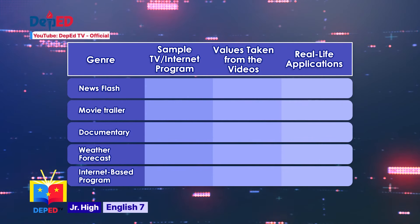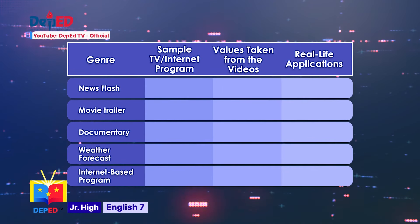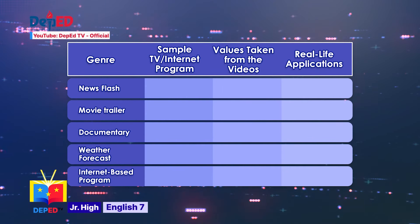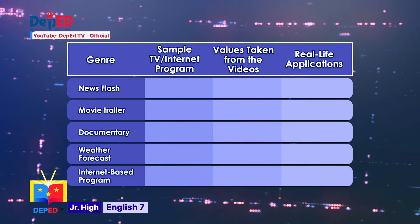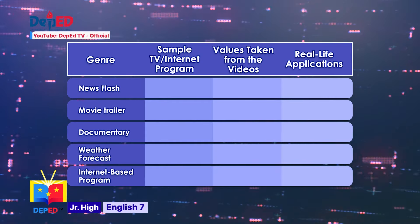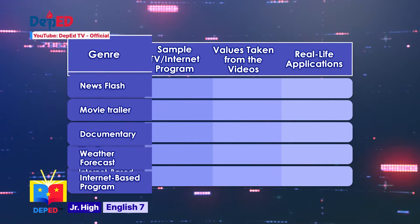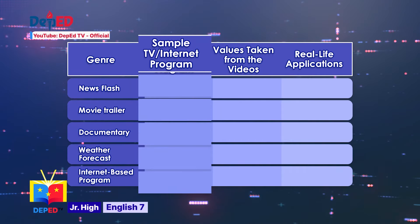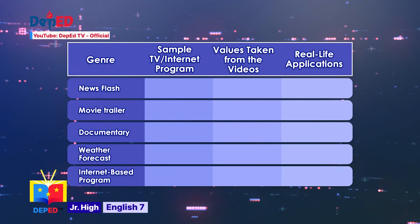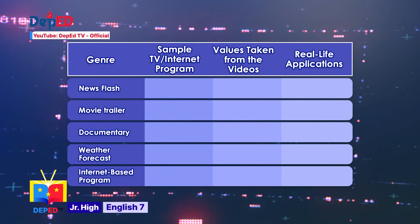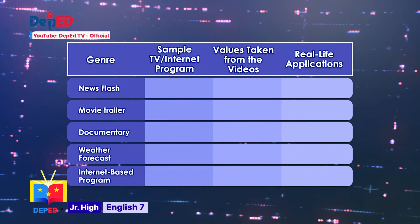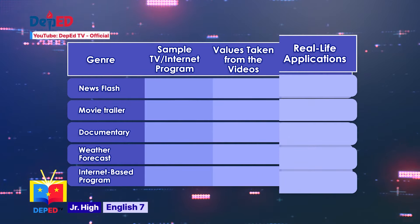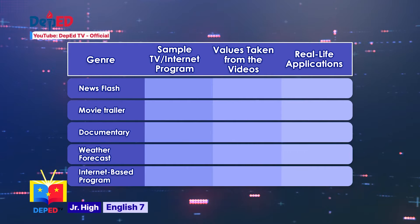Now, your answers may vary here, depending on the programs or videos you've watched. Let's take the following as samples! On the first column, we have the genre. The second column is the sample TV or internet program. For the third column, we have the values taken from the videos. And for the fourth column, we have the real-life applications.